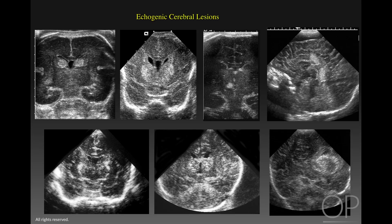Going back to the original seven infants we saw, the lesions include germinal matrix hemorrhage, basal ganglia ischemia, neurocutaneous melanosis, a callosal lipoma. In the second row, we have gliosis, diffuse basal ganglia calcification secondary to ischemia, and finally a choroid plexus papilloma or carcinoma. I hope that this talk helped expand the differential diagnosis of echogenic lesions in cranial sonography.